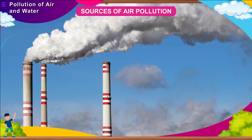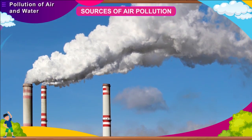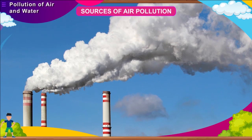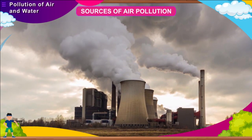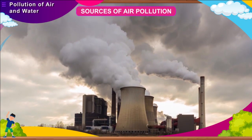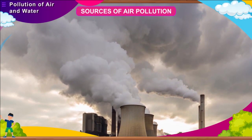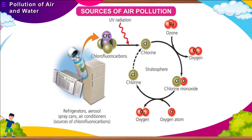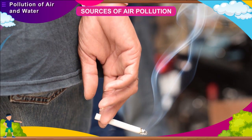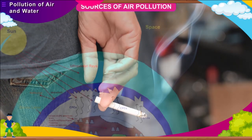Poisonous gases such as sulphur dioxide, nitrogen dioxide and carbon dioxide are released from factories. Burning of fossil fuels such as petrol and diesel causes the emission of gases like carbon dioxide and sulphur dioxide, and also emits unburnt carbon as a pollutant. Chlorofluorocarbons (CFCs) used in refrigerators and spray cans deplete the ozone layer. Smoking by people releases harmful substances like carbon monoxide and nicotine into the atmosphere.